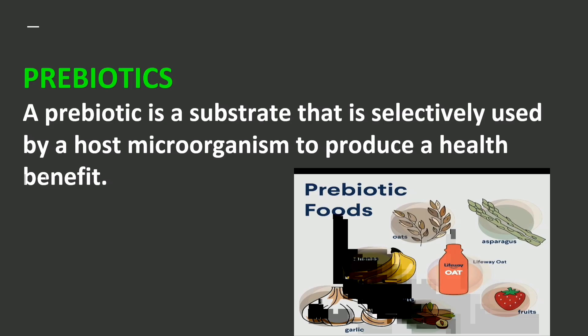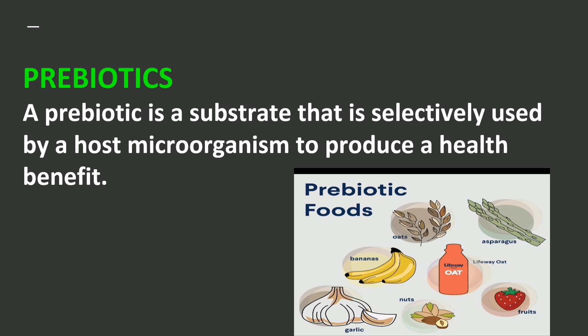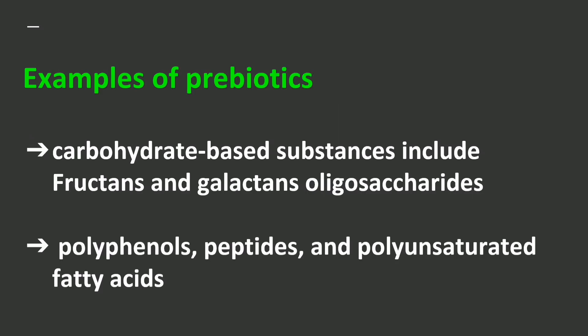Let's go to prebiotics. Prebiotics are a substrate that is selectively used by a host microorganism to produce health benefits. Examples include carbohydrate-based substances such as fructans and galactans, oligosaccharides. Also, polyphenols, peptides, and saturated fatty acids are considered as prebiotics.